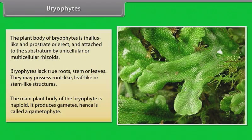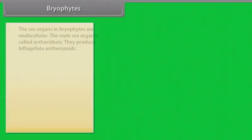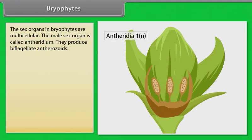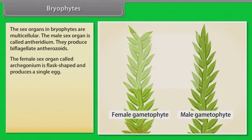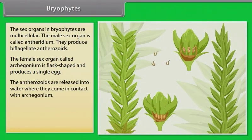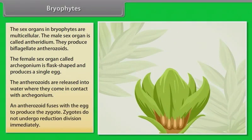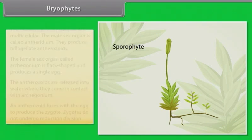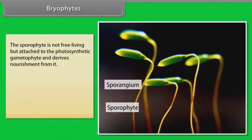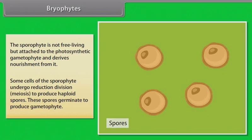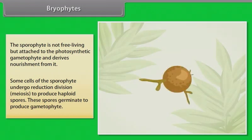The main plant body of the bryophyte is haploid. It produces gametes hence is called a gametophyte. The sex organs in bryophytes are multicellular. The male sex organ is called antheridium. They produce biflagellate antherozoids. The female sex organ is flask shaped and produces a single egg. The antherozoids are released into water where they come in contact with archegonium. An antherozoid fuses with the egg to produce the zygote. Zygotes do not undergo reduction division immediately. This sporophyte is not free living but attached to the photosynthetic gametophyte and derives nourishment from it. Some cells of the sporophyte undergo reduction division, meiosis, to produce haploid spores. These spores germinate to produce gametophyte.